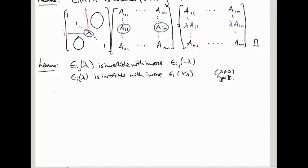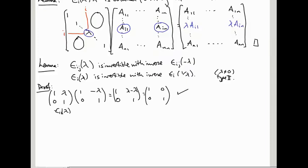So 1 lambda 0 1, this is E_1 2 lambda, 2 by 2 matrix, times 1 minus lambda 0 1 is 1 minus lambda plus lambda 0 1, that is the identity matrix.